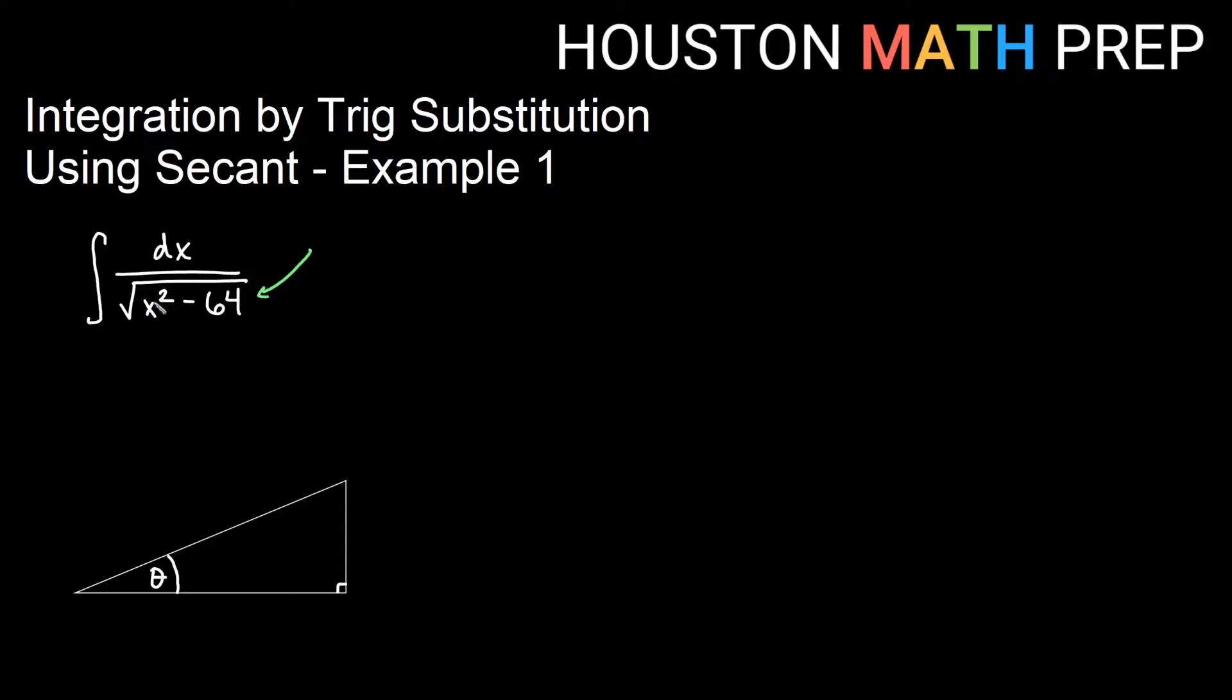So we want to identify this variable squared expression minus constant expression as a u squared minus a squared. And so in this instance, when we have u squared minus a squared,